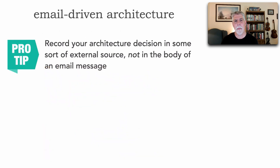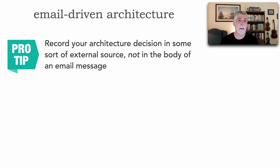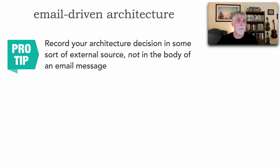The first tip is to record your architecture decisions in some sort of external source, not within the body of the email message. If I describe the architecture decision and send it to 25 people, there are now 25 different messages plus mine — 26 different systems of record. And if I change my decision and email that to everybody, I might not email the same crowd, one person might not receive it, and now there's confusion about which version is right.